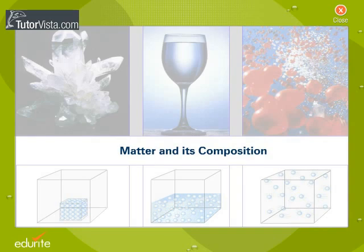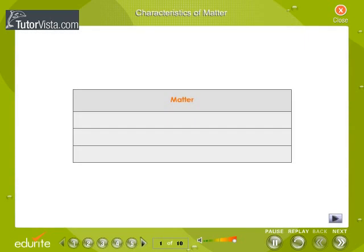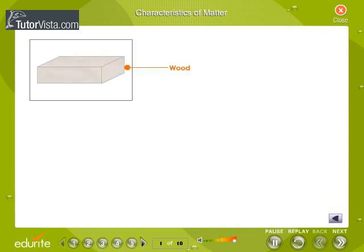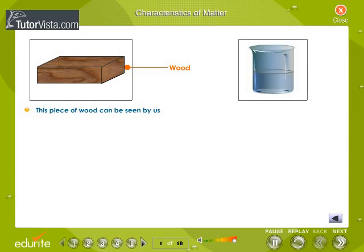Matter and its composition. Characteristics of matter: matter can be perceived by our senses. It occupies space and has a definite mass. The illustrations show that matter exhibits all these features.